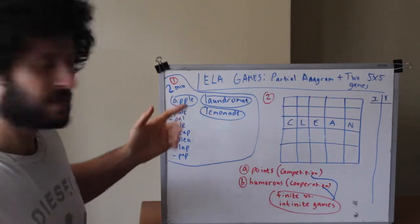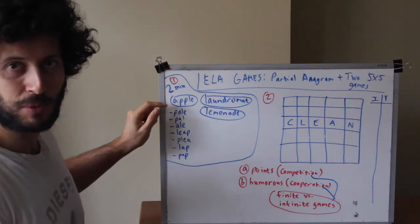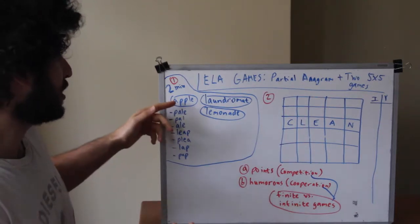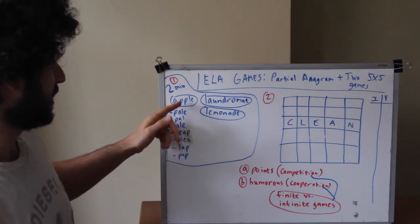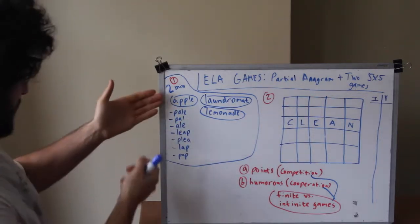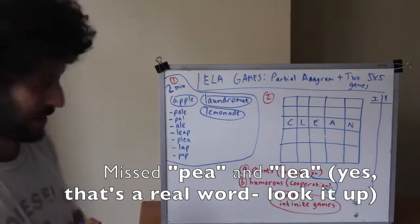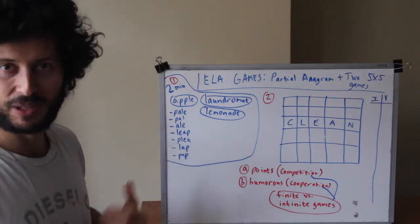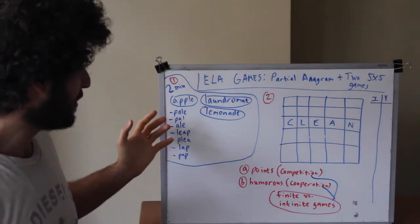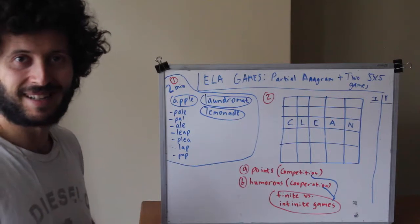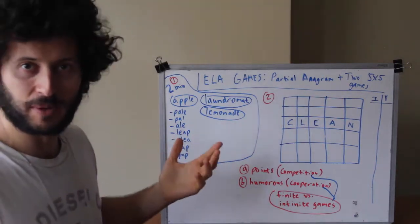So let's just say two minutes. Take two minutes and see how many words you can come up with using the letters from Apple. It's called a partial anagram because you don't have to use all the letters from Apple and you can reuse the letter Ps because there are two Ps. I find it kind of a creative little game to get your ELA brain flowing.